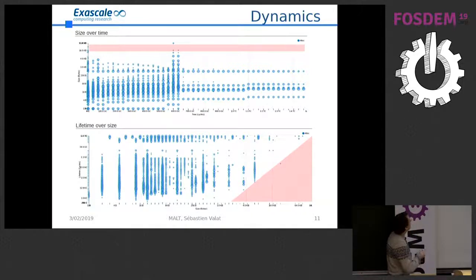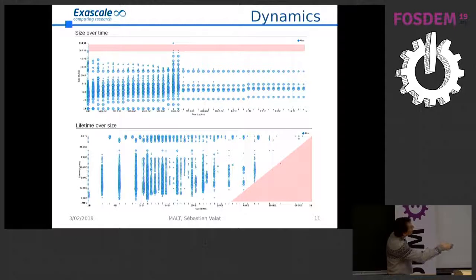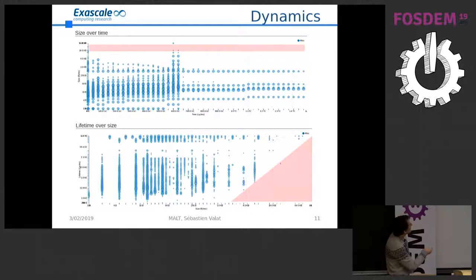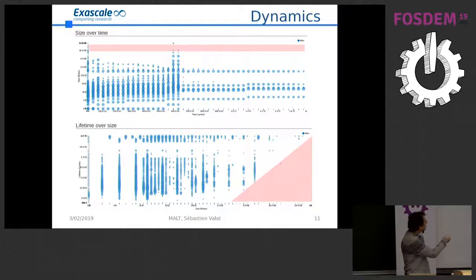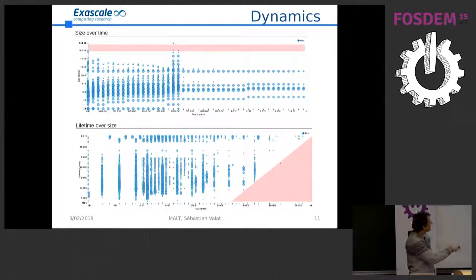You can also look at chunk sizes you are allocating over time — for example, whether you are always allocating blocks of one byte throughout the application's life — and the lifetime depending on size. If you are allocating 10 megabytes for one microsecond, the operating system will start to have performance issues. You can quickly detect this kind of thing just by looking at the charts. I was seeing this a lot during my PhD implementing my memory allocator.